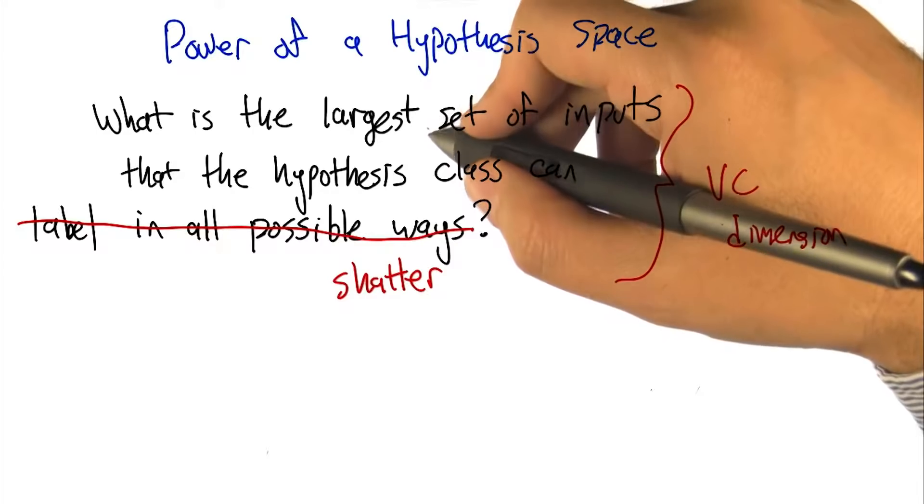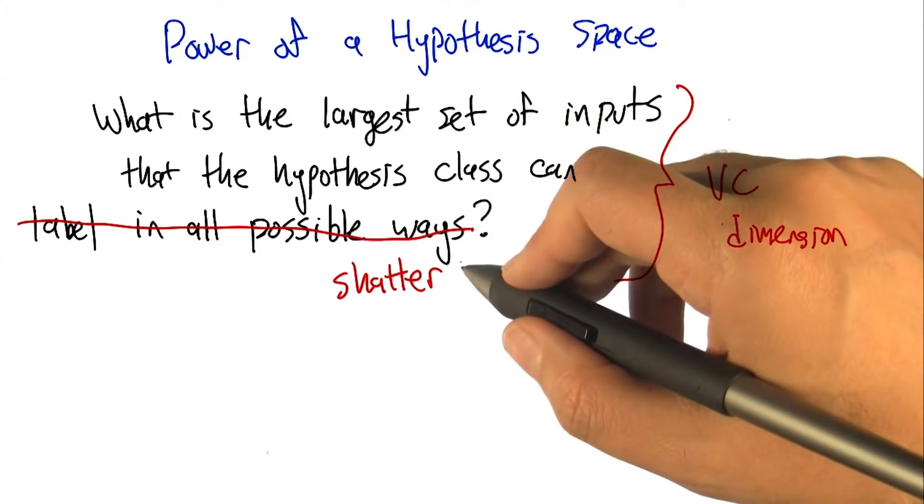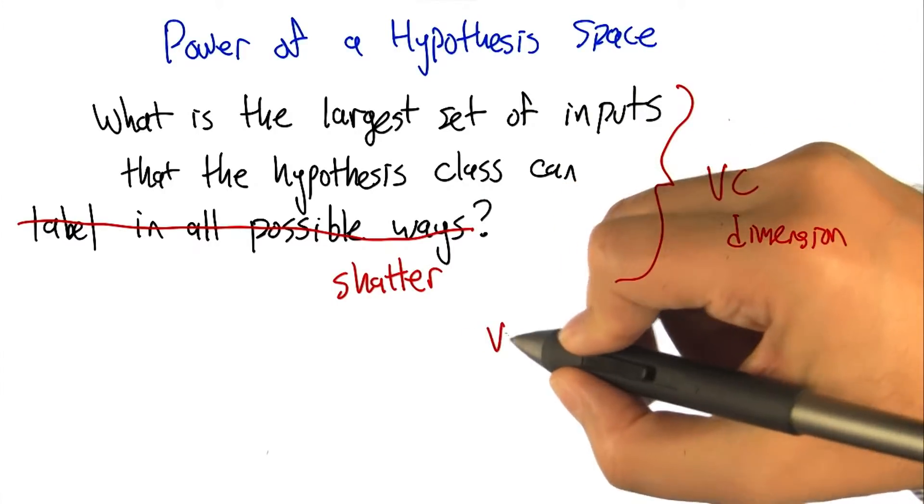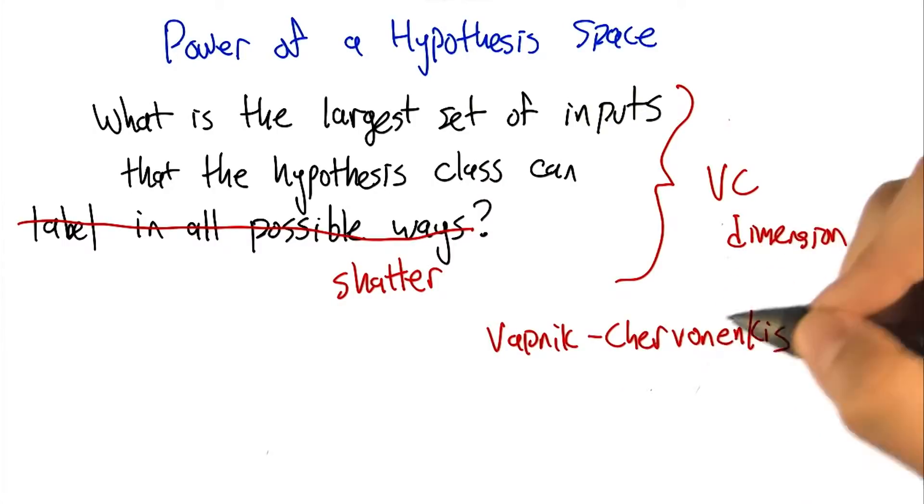So this quantity that we're talking about here, this size of the largest set of inputs that the hypothesis space can shatter, is called the VC dimension. What does VC stand for? VC stands for Vapnik-Chervonenkis, which is a pair of actual people.